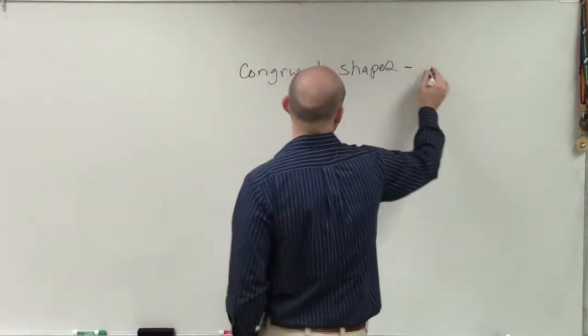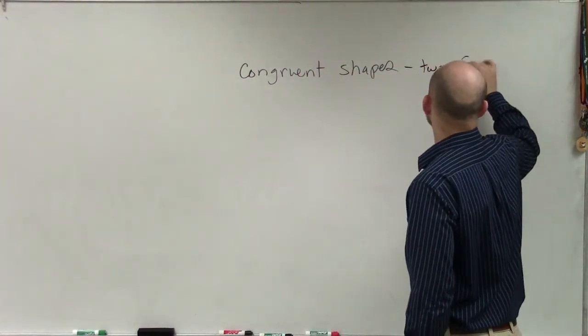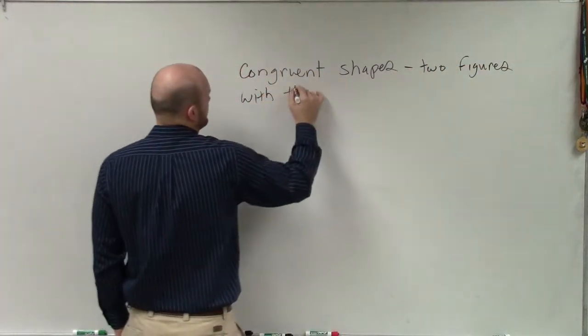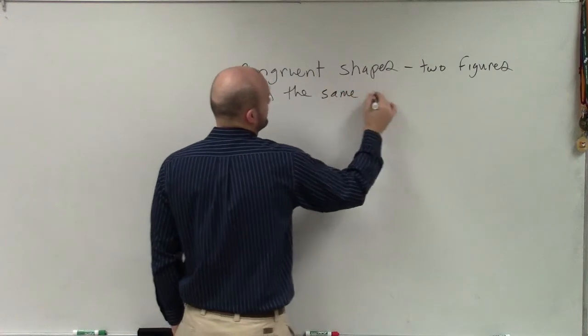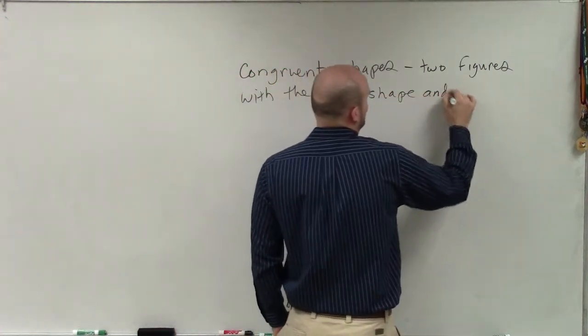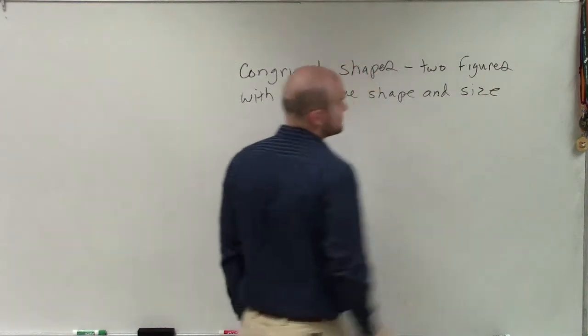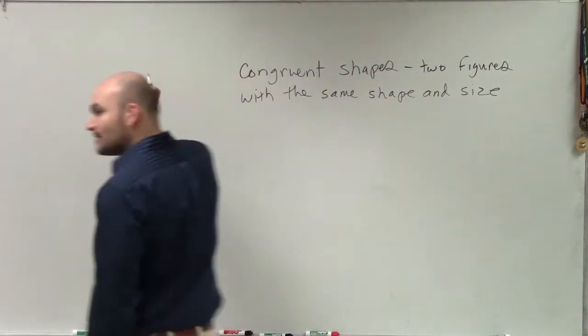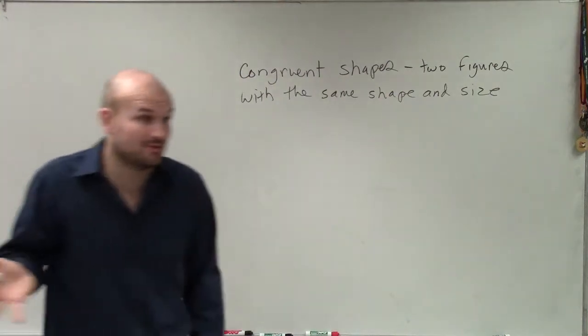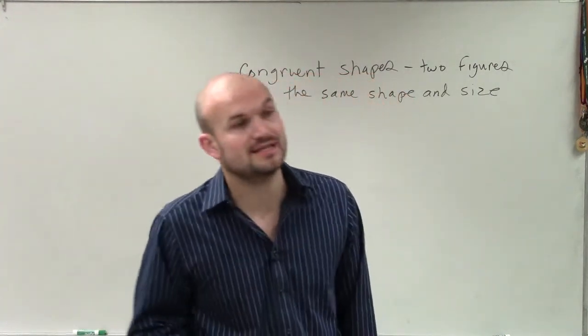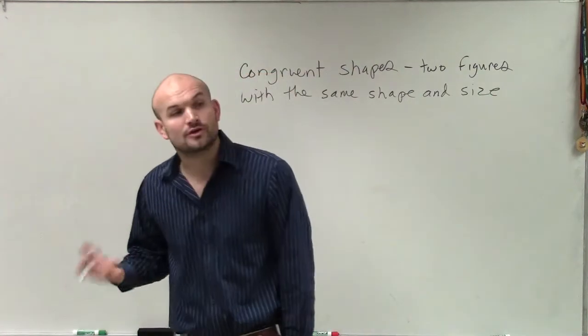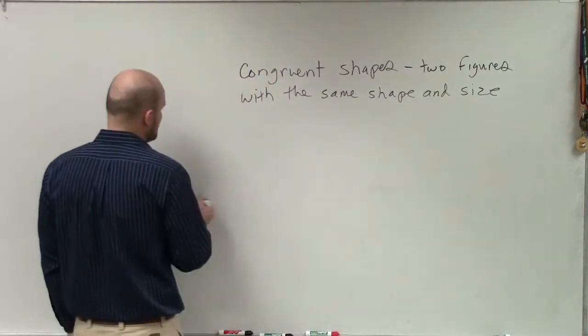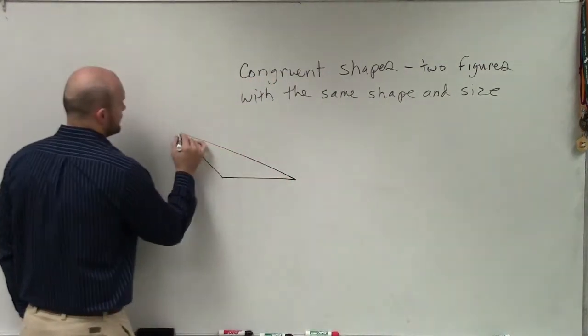So when we're looking at congruent shapes, just remember those are going to be two figures with the same shape and size. We're going to talk a little bit more in detail with this, but when we're talking about the same shape and size, they have to be the exact same shape, and the size of all their congruent parts has to be exactly equal. So let's take a look at an example for that.